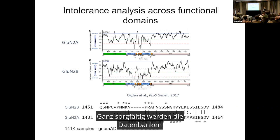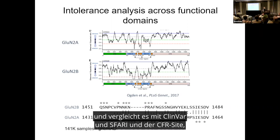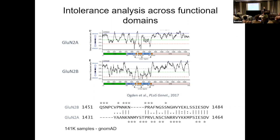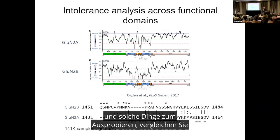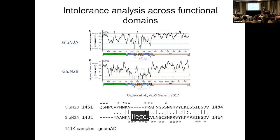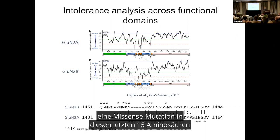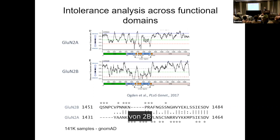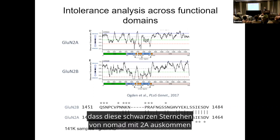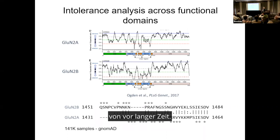Since then, we've been carefully watching both the unaffected gnomAD database and comparing it to ClinVar, SFARI, and the CGIRB site to compare GluN2A and GluN2B. As of now, we don't find in any database a missense mutation in the last 15 amino acids of GluN2B.